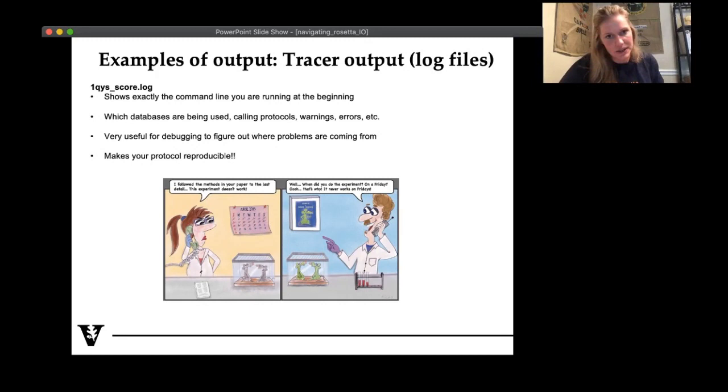So we also output the terminal, what went through the terminal into a log file. And this is really nice for a number of reasons. One of the first lines of a log file is the command line that you actually ran. This is great for being able to know exactly what you ran in that particular command. It also gives you information about the databases being called, which protocols that you're using. It's also really nice potentially for debugging a run so you can get warning or error outputs.